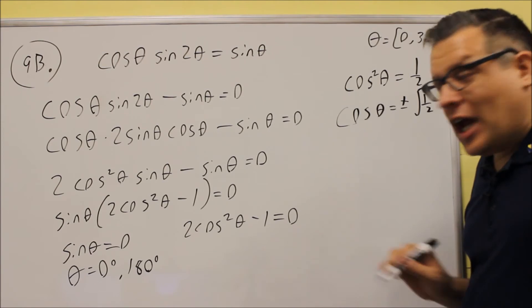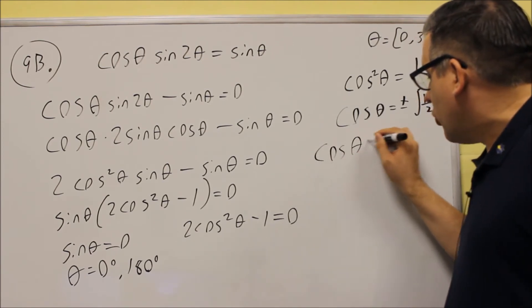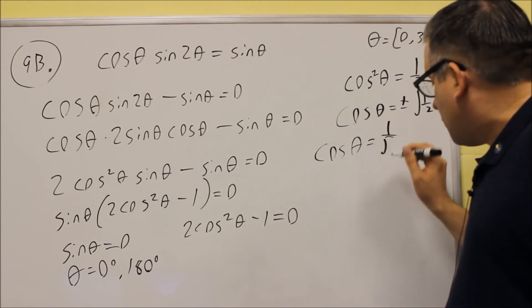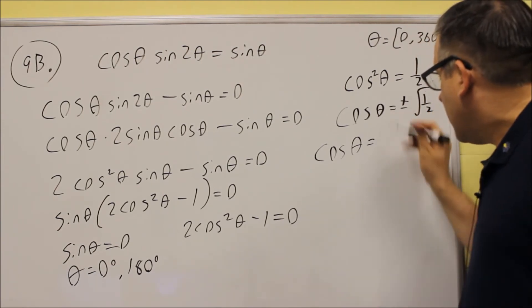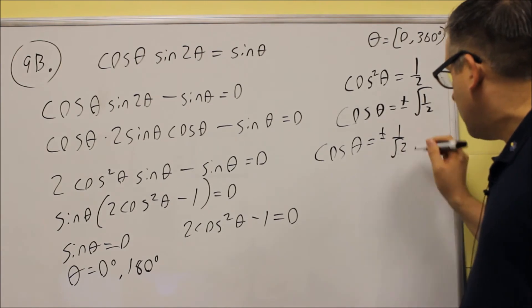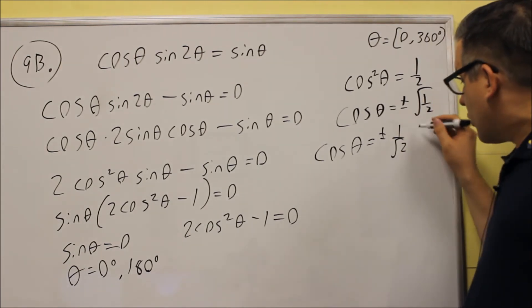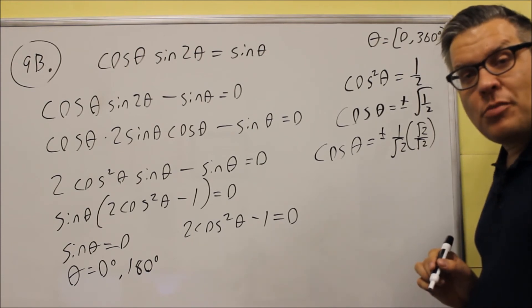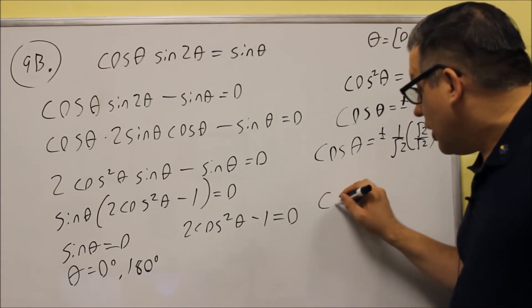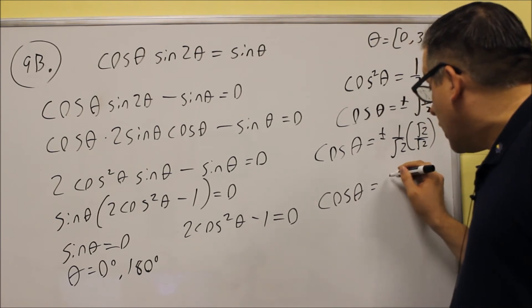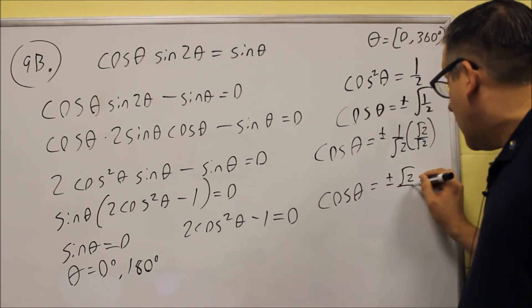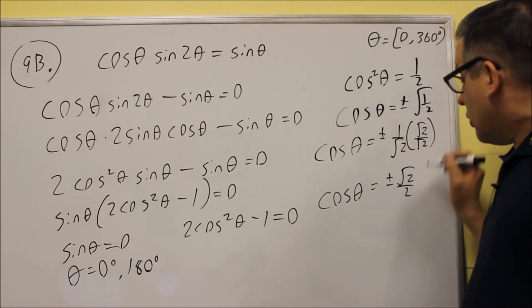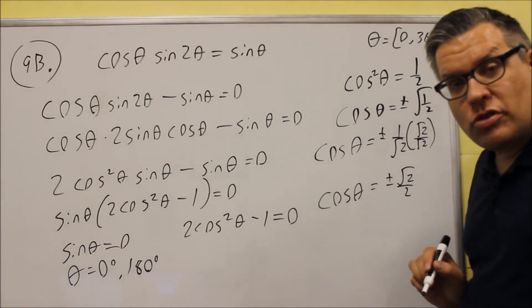Now to make this look like a value that we have on the unit circle, we'll write this as plus or minus 1 over square root of 2 first. And then we want to rationalize it. So we've got plus or minus 1 over square root of 2. I'm going to now rationalize it by multiplying by square root of 2 over square root of 2. And the only reason for doing that is to get a familiar value on the unit circle that we can get the angle for. When you rationalize it, you're going to get plus or minus square root of 2 over 2.